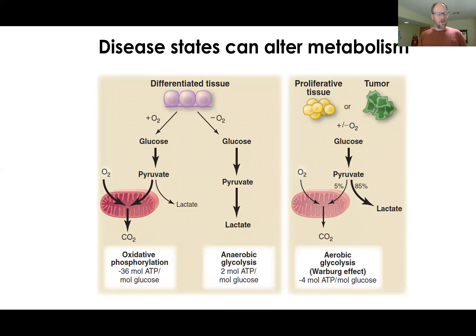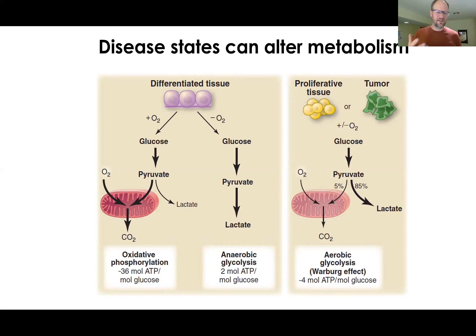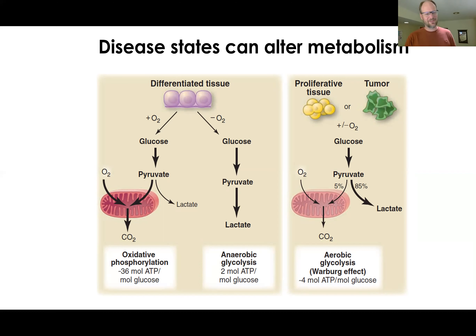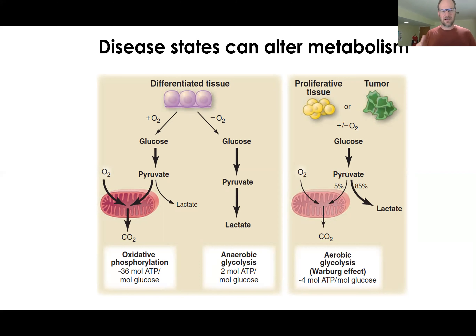We'll also learn about some things you may not have thought about as metabolic diseases — things like cancer, which people have historically thought of as a genetic disease, but which is actually intimately tied to metabolism. We'll learn about the Warburg effect, and we'll learn about autophagy and glutamine catabolism — all kinds of adaptations that happen in cancer cells and how those are intimately tied to the evolution and progression of cancers.